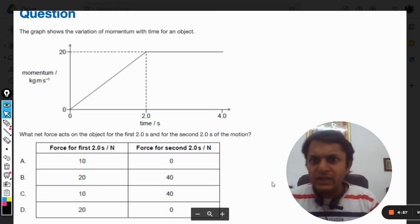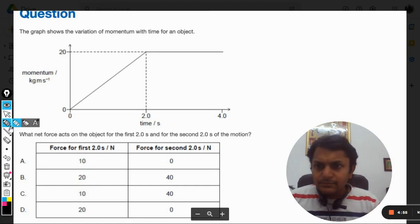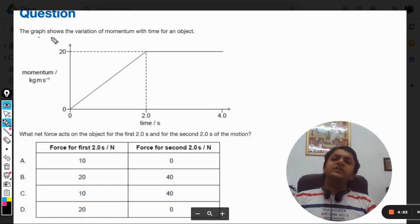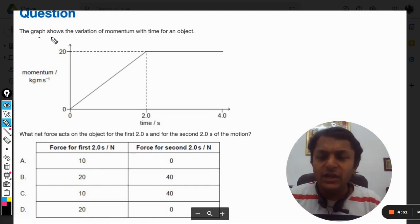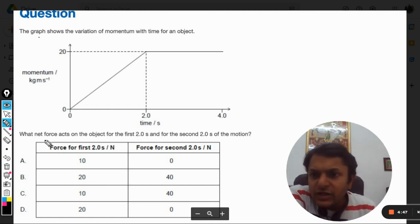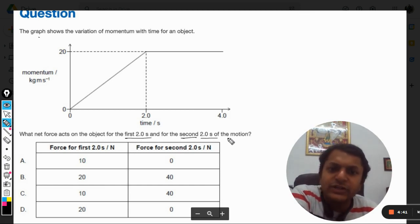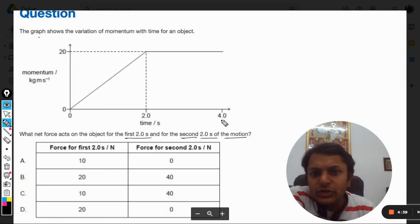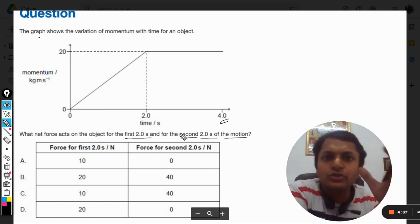In this question, the graph shows the variation of momentum with time for an object. What net force acts on the object for the first two seconds and for the second two seconds of the motion? The total time taken by the body for the motion is four seconds.